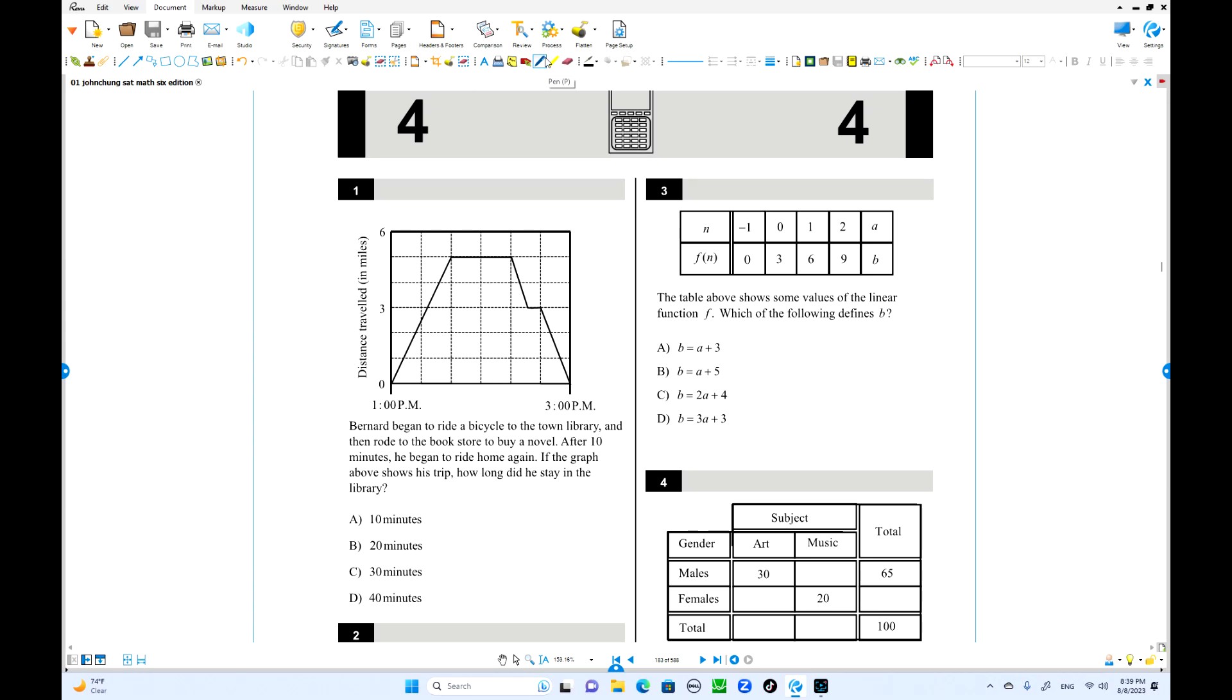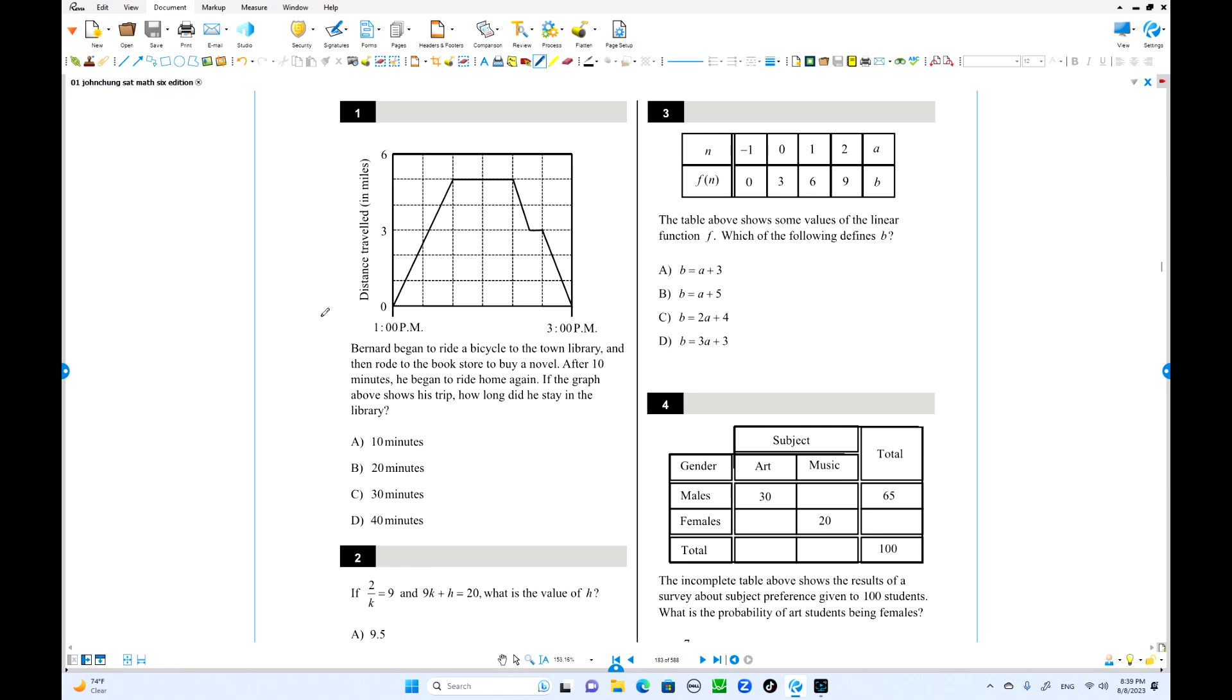This is Test 3, Section 4. We're going to start from number 1. So we have a graph there, so follow the context. Bernard began to ride a bicycle to a town library and then rode to the bookstore to buy a number.